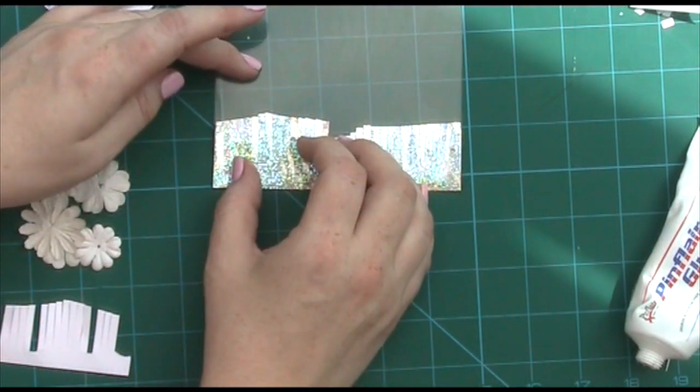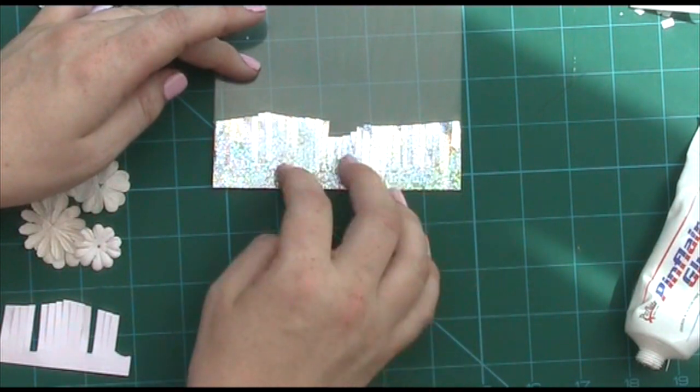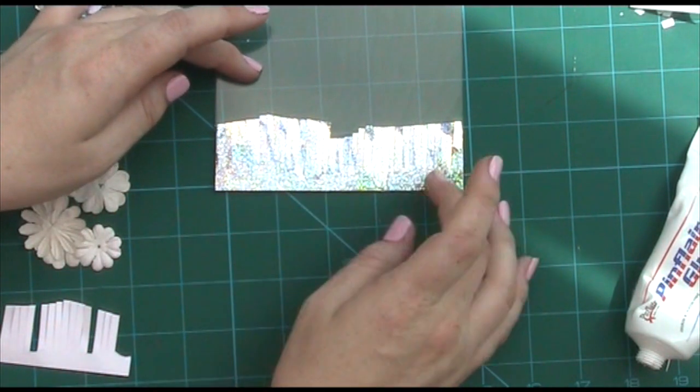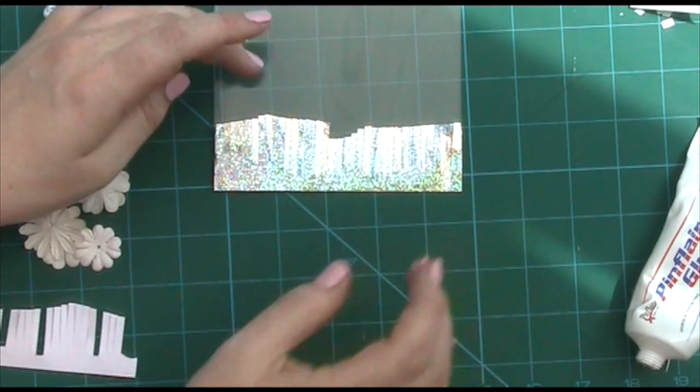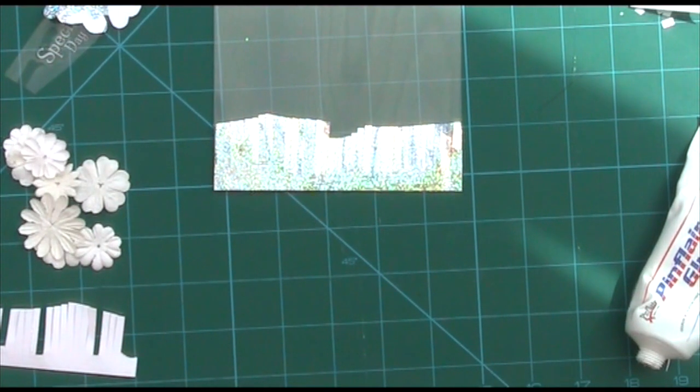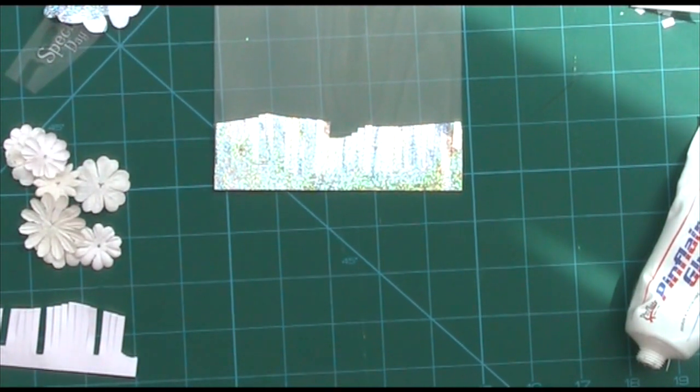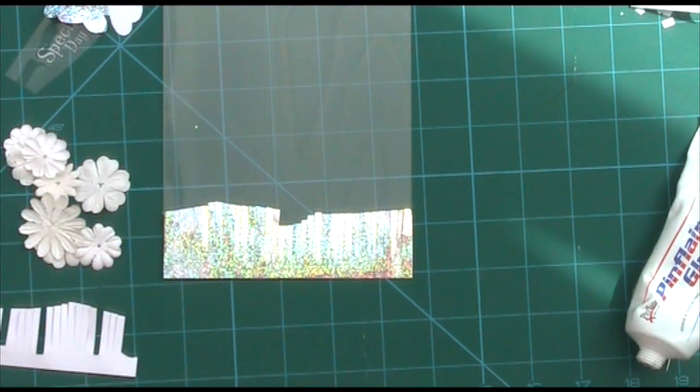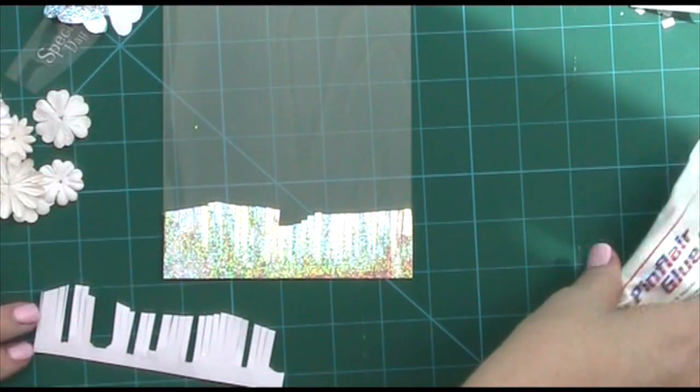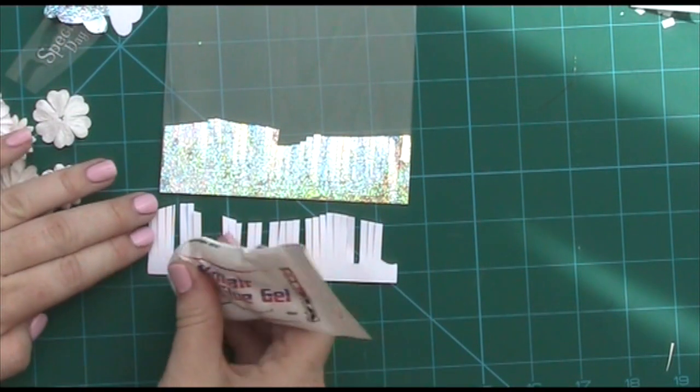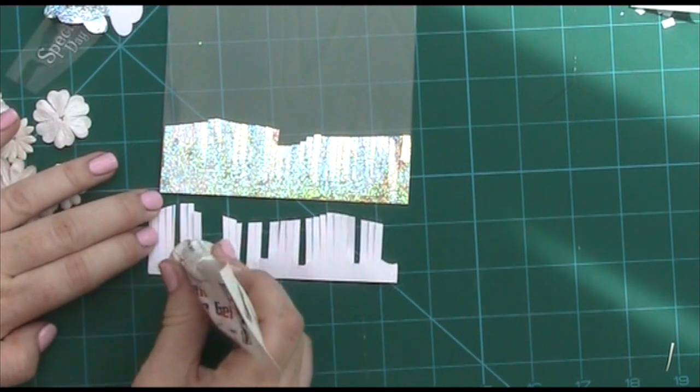I don't want the grass parts stuck down, I'm quite happy with that being loose. Then I'm going to take the next section and just again, small amount of glue gel, there we go.